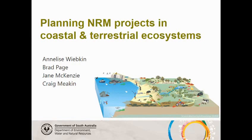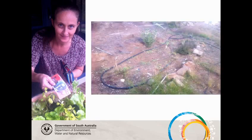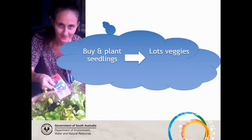My talk is mostly about some methods that we've used in planning some NRM projects at the very beginning. To start with, I'm going to show you a couple of scenarios that provide analogies. The first scenario: a really good friend of mine every year has this great idea to go out and buy some veggies and plant a vegetable garden, and each year she buys the veggies, pops them in the ground, and this tends to be the result three months later. It's a fairly simplistic level of planning.